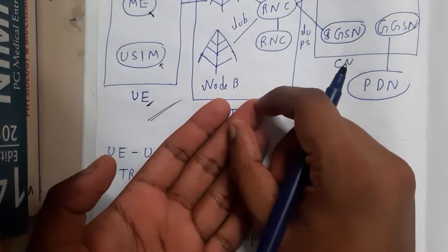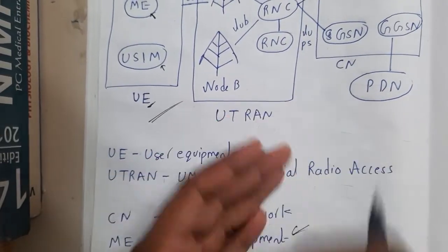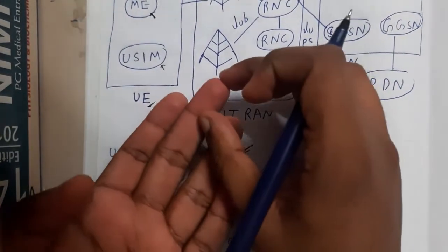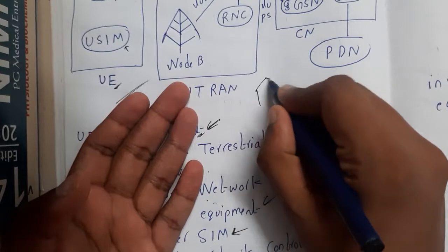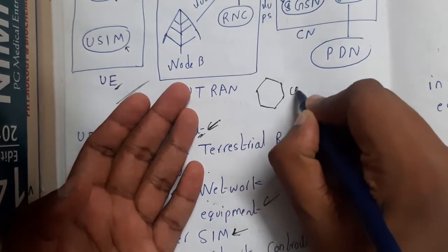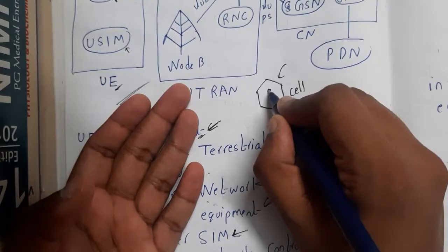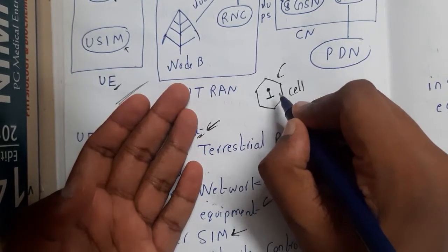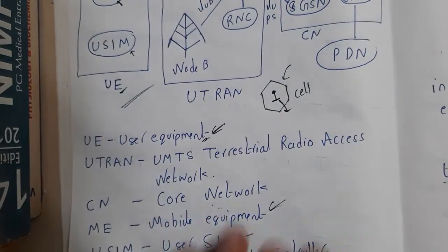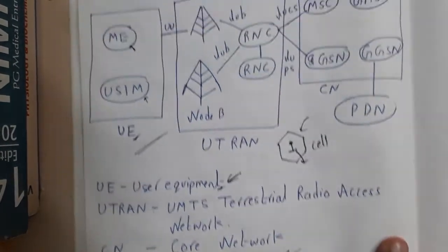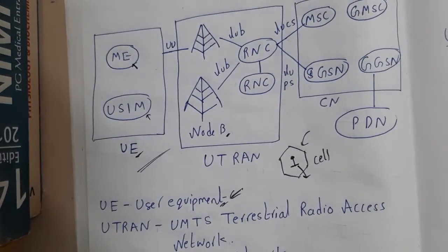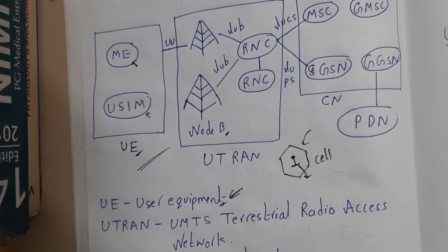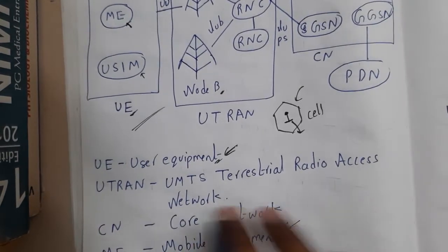Once you have your mobile phone with a SIM — it might be Airtel, Jio, BSNL, or any network — these SIMs have their base stations in your area. A particular area is called a cell. Each cell has at most one base station exactly at the center covering the whole cell. In UMTS, these base stations are called Node B's.